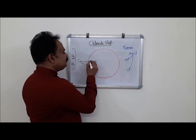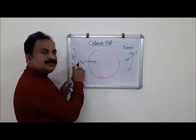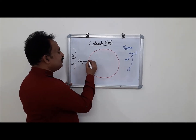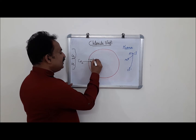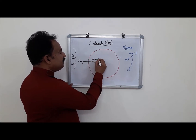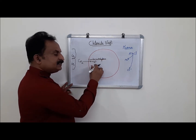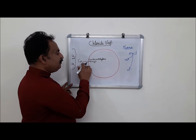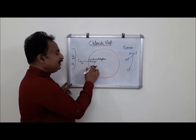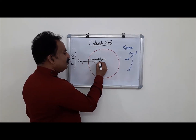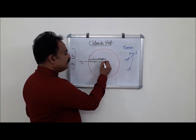The enzyme responsible for the combination of carbon dioxide with water is called carbonic anhydrase, which is present in the RBC. This enzyme present in the RBC helps carbon dioxide combine with water to form carbonic acid, H2CO3.